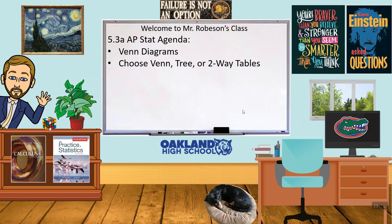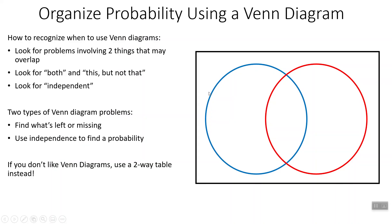Hi everybody, it's Mr. Robeson here back with statistics. Today we're going to look at another way to organize probabilities and data using Venn diagrams, then we're going to look at the difference between Venn diagrams, tree diagrams, and two-way tables.